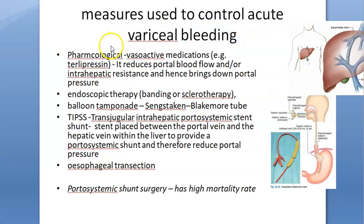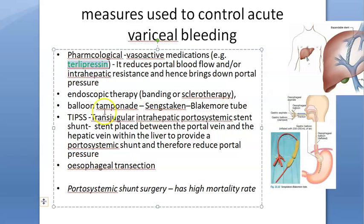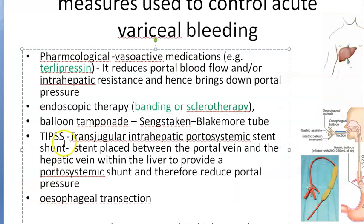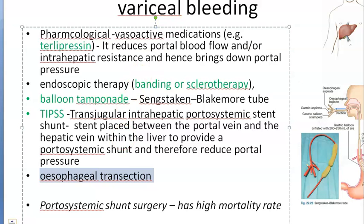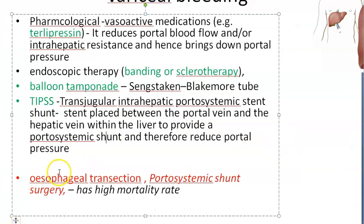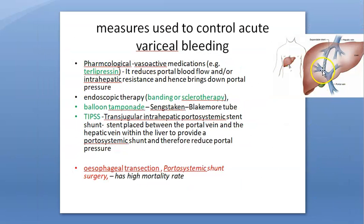To summarize the management of acute variceal bleeding: give terlipressin to reduce portal pressure, find the varices by endoscopy, then band or do sclerotherapy. Check hemostasis — if achieved, give prophylactic propranolol and continue terlipressin. If bleeding does not stop, do further endoscopy, consider balloon tamponade or emergency TIPS. Esophageal transection and portosystemic shunt surgery are last resorts but carry very high mortality rates.